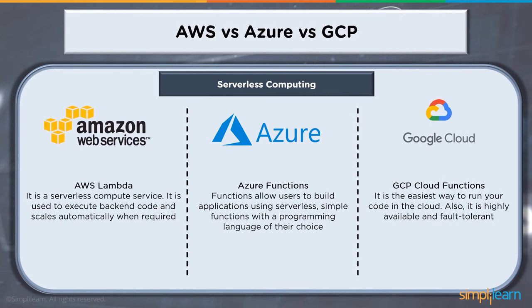When we talk about Google Cloud, GCP has Cloud Functions — the easiest way to run your code in the cloud — and it is highly available and fault tolerant. When talking about microservices architecture, which organizations are preferring, organizations would be interested in serverless computing where they do not have to have an infrastructure setup planned in advance, as monolithic applications are not a preferred choice today.